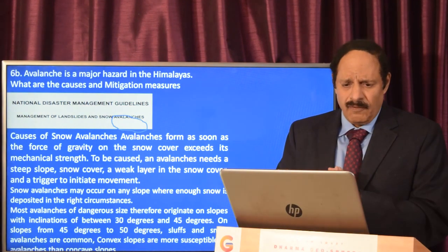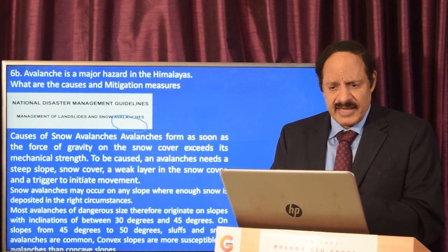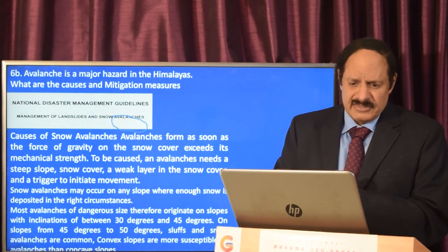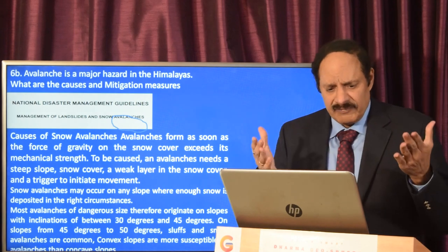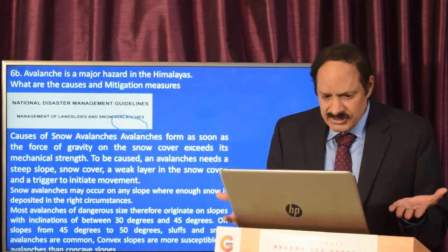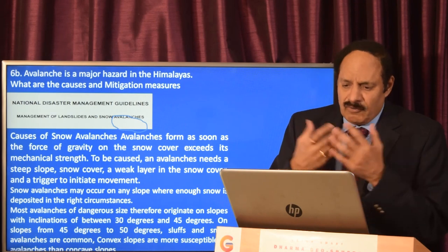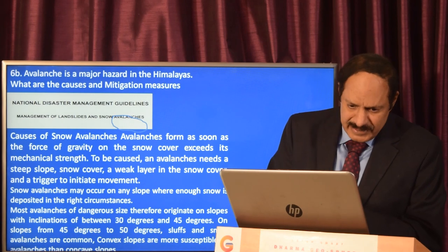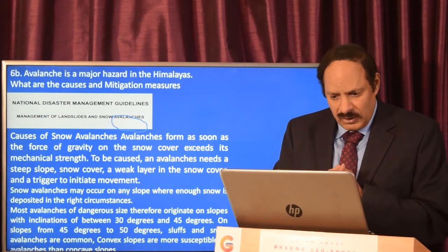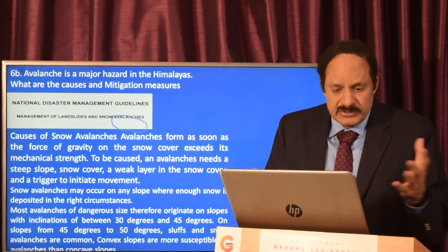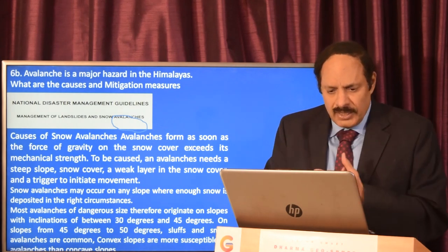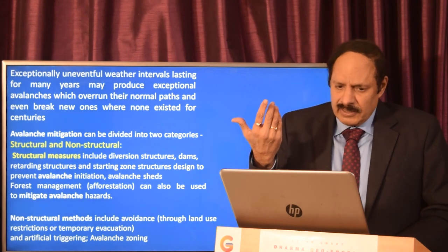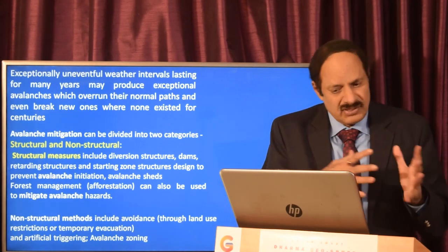Question 6b is straightforward: avalanche is a major hazard in the Himalayas — what are the causes and mitigation measures? According to national disaster management guidelines, avalanches form as soon as the force of gravity on the snow cover exceeds its mechanical strength. They can also occur on slopes where snow is deposited under the right circumstances. These are all the causes you would have mentioned.